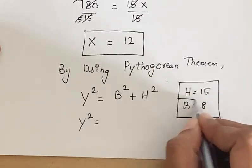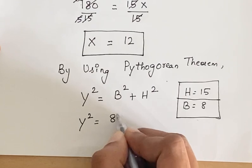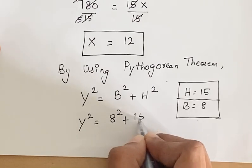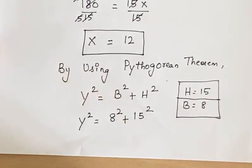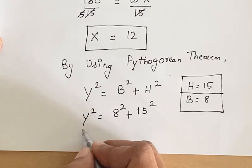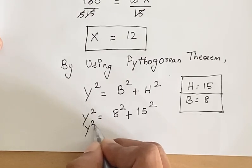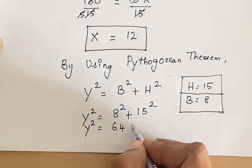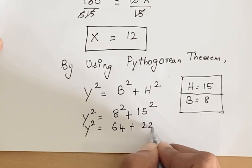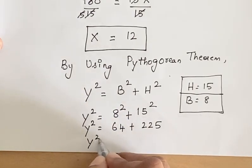Now let us apply this value here. We get b squared is 8 squared plus h squared is 15 squared. So y squared equals 8 squared is 64 plus 15 squared is 225. So y squared equals 289.